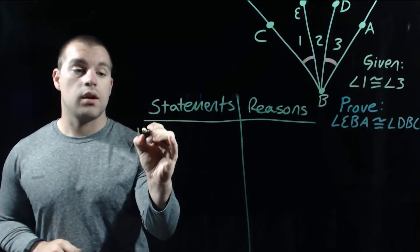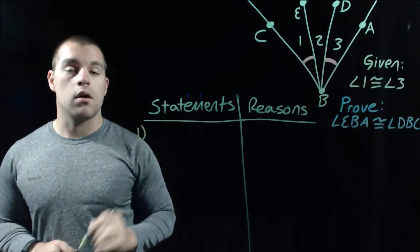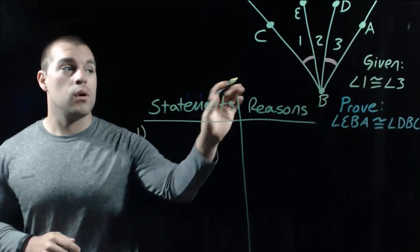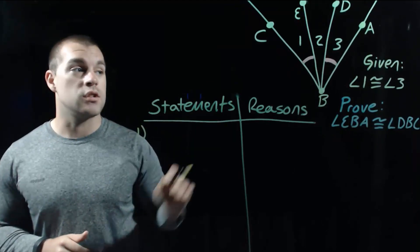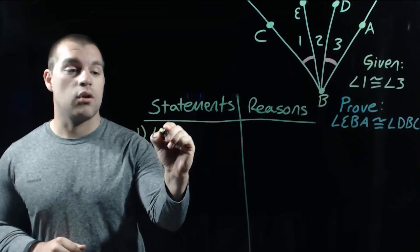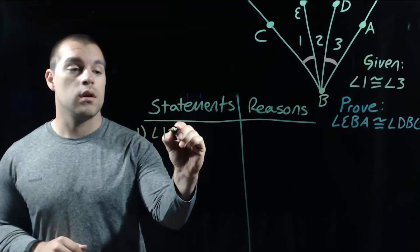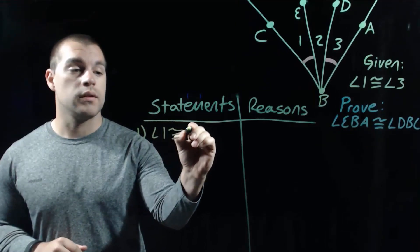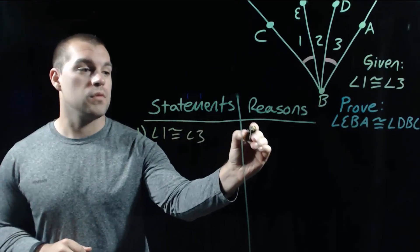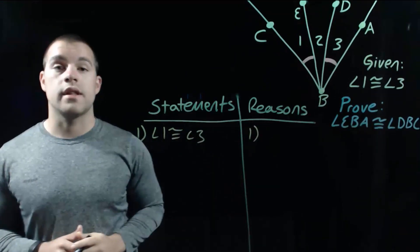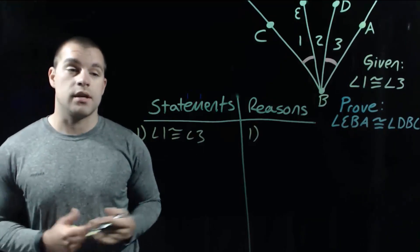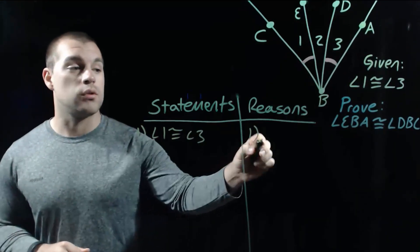Just like we did with our equation proofs, we always want to start with our given information. So in this one, we're given that angle 1 is congruent to angle 3, and our reason there is just "given," because that was the information that was told to us.